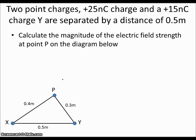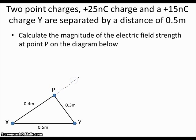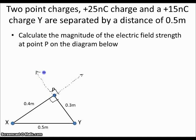Now let's try a different kind of problem. Instead of calculating along the straight line between X and Y, we're asked to calculate the magnitude of the electric field strength at point P in the diagram. The electric field from X points in one direction toward P, and the electric field from Y points in another direction toward P. These form right angles, so we can use the Pythagorean theorem once we find the magnitude of each vector.